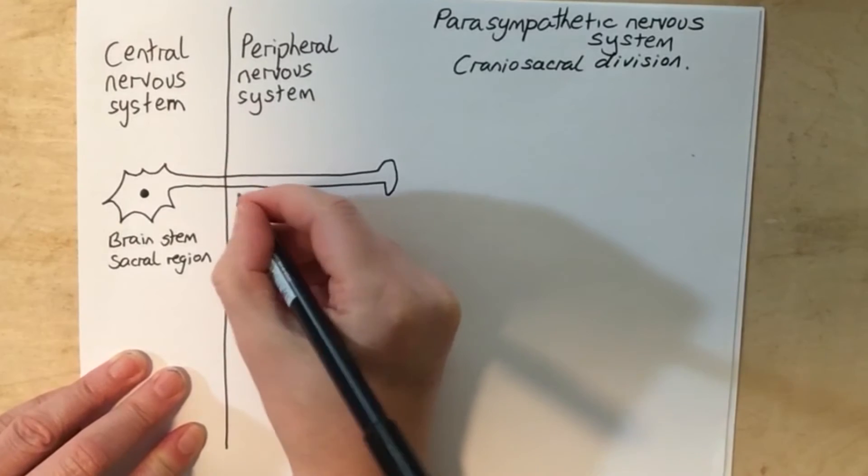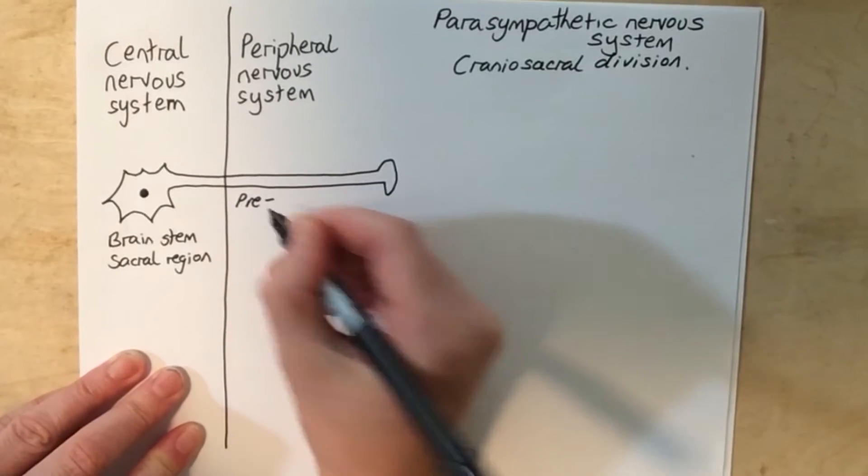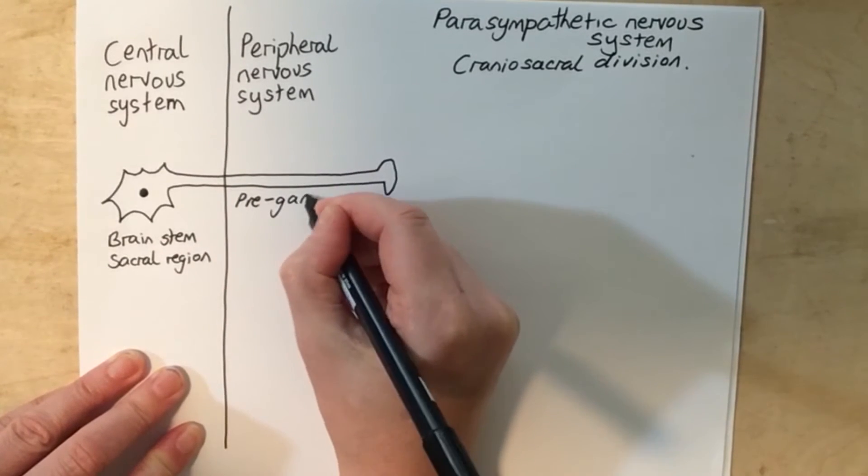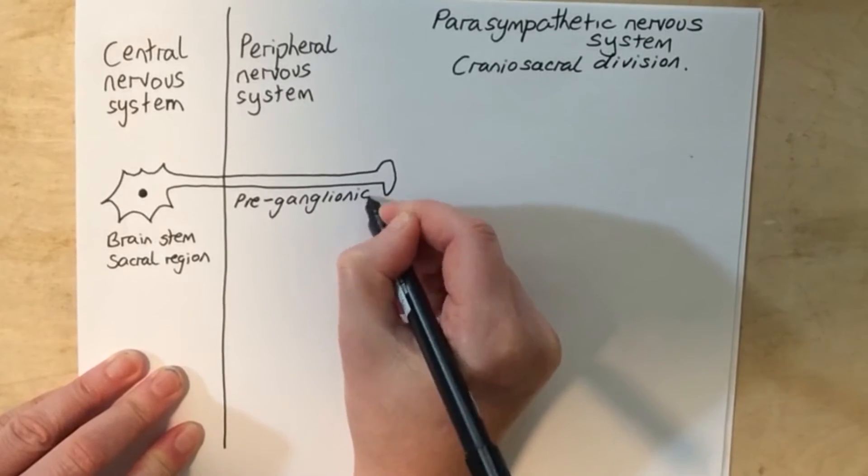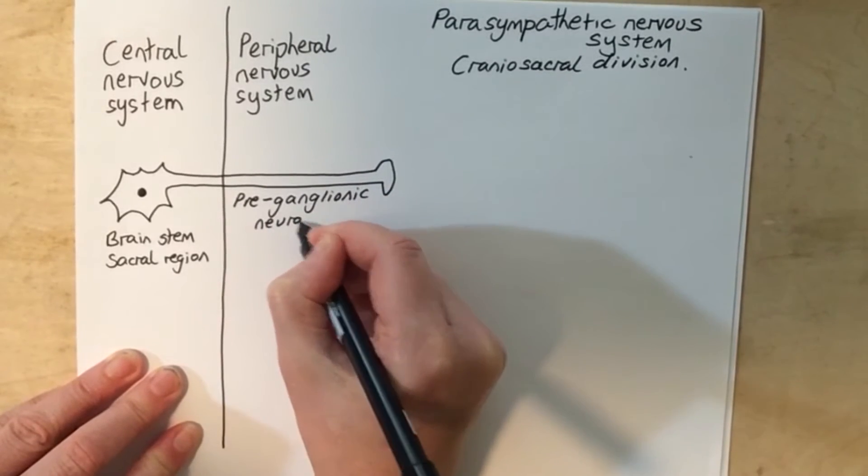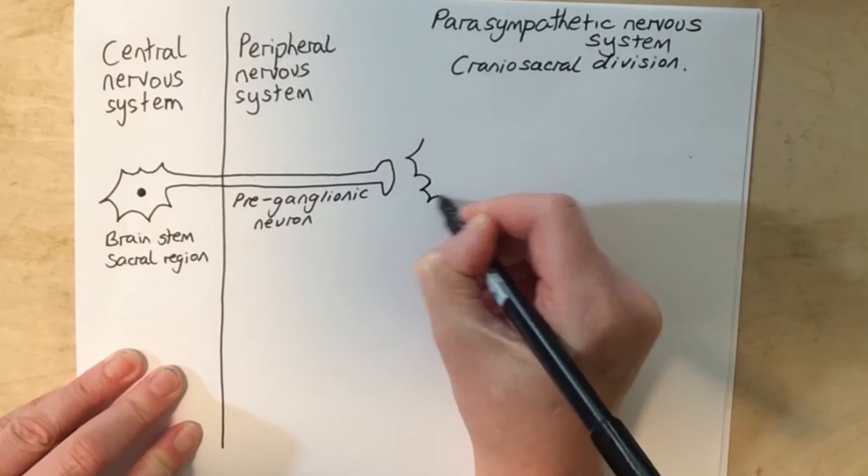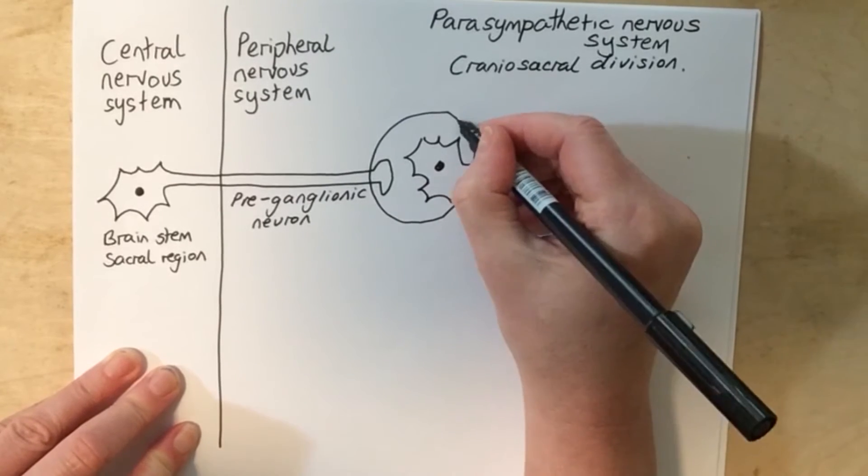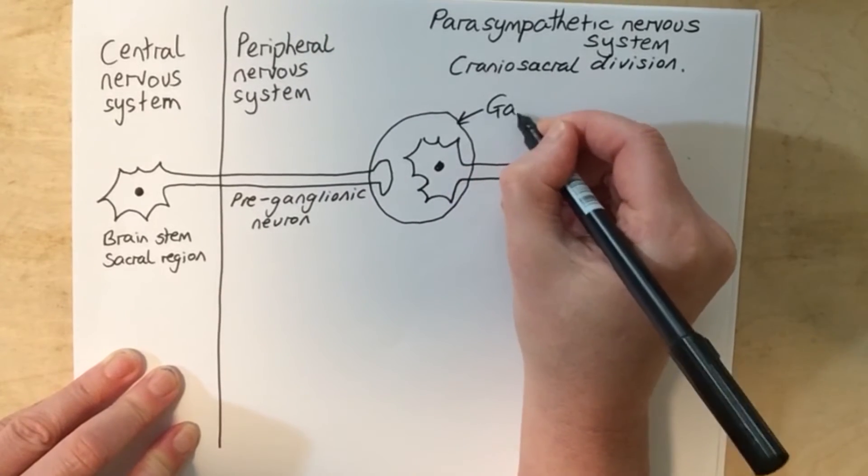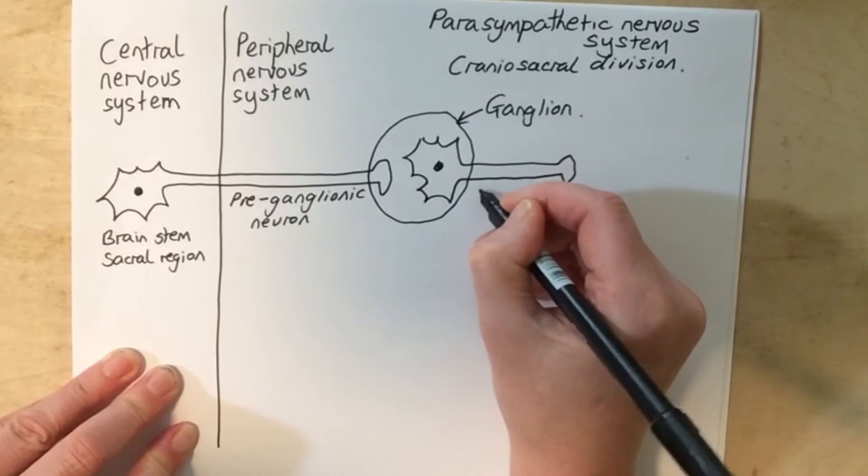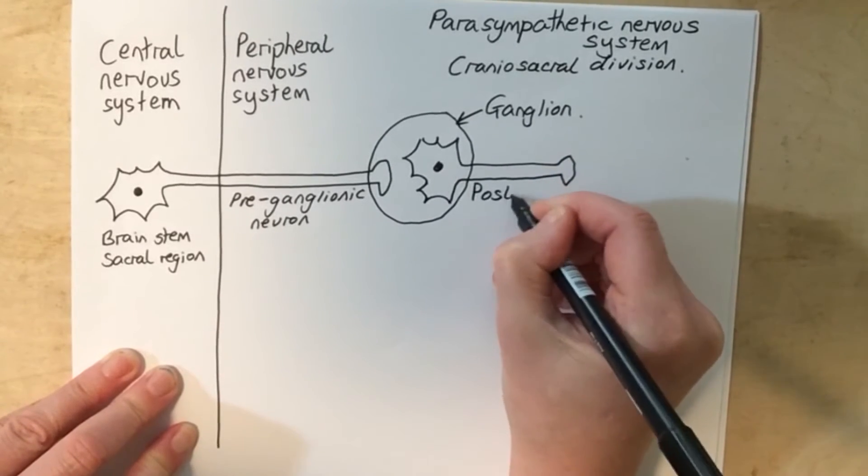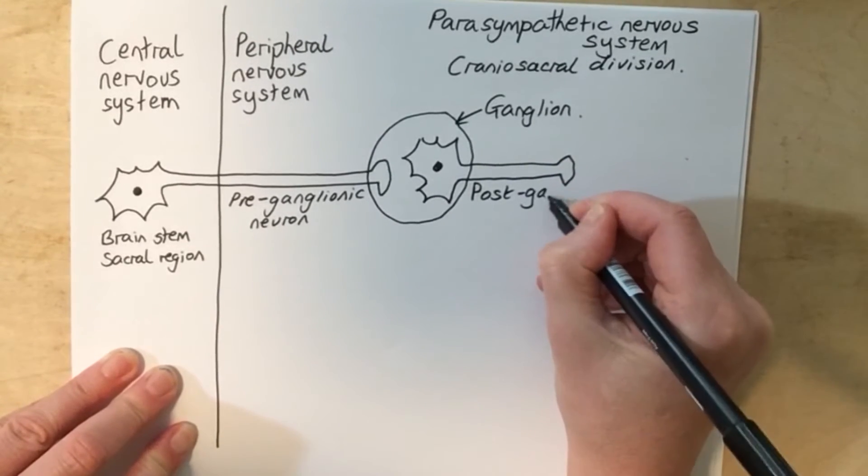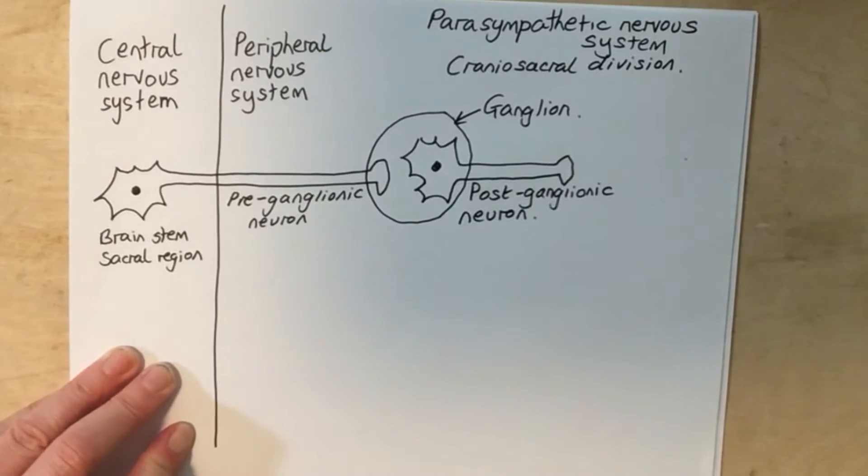This preganglionic neuron will synapse with the postganglionic neuron at a specific location called a ganglion. This is our ganglion right here. And this is the postganglionic neuron. The postganglionic neuron will then synapse with the target cell, which could be a muscle cell or a gland cell.